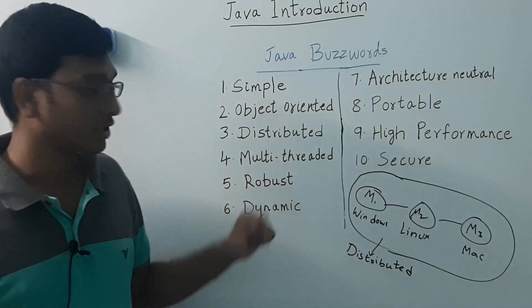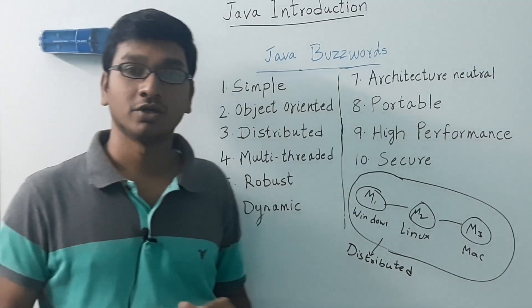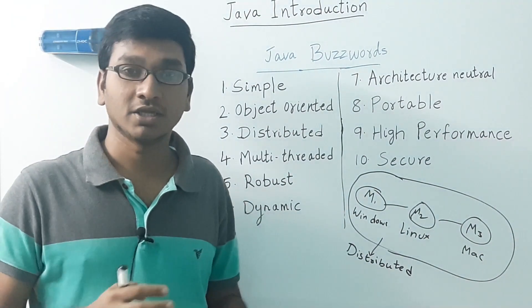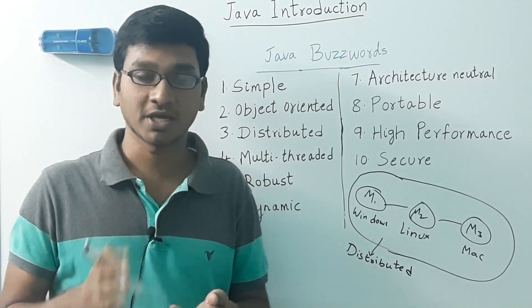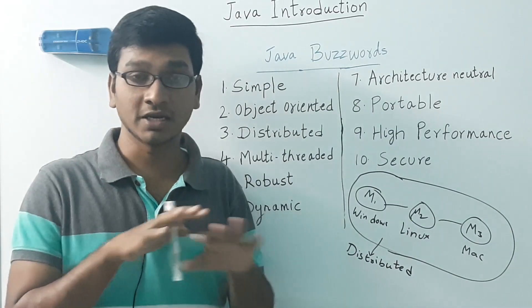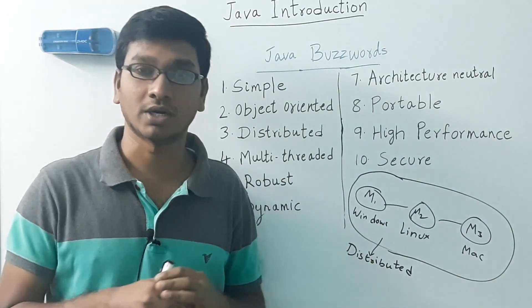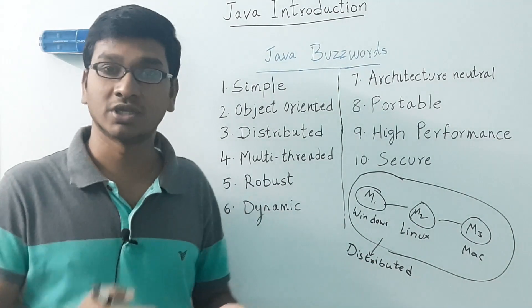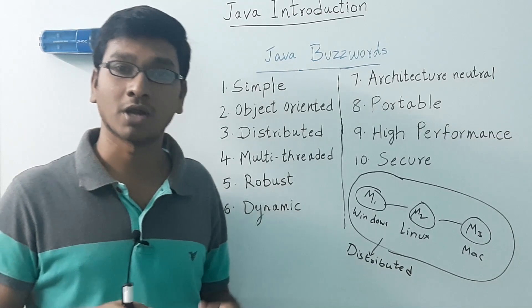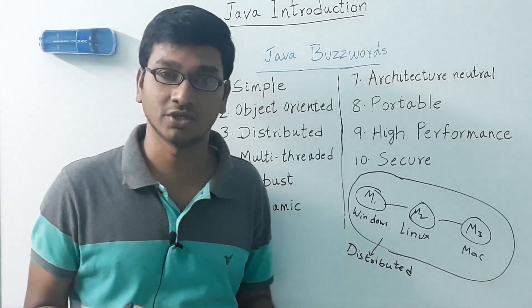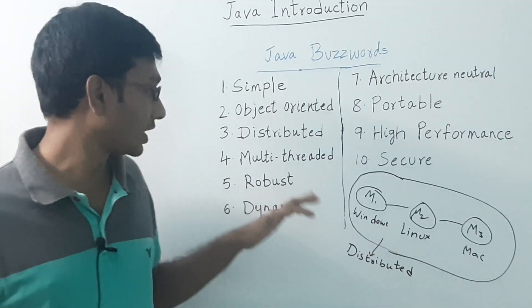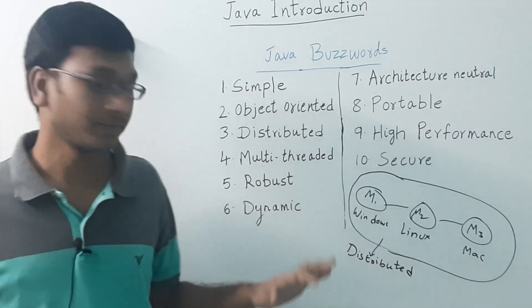Next is multi-threaded. A task is divided into subtasks and run in parallel at the same time, so that we save time and achieve efficiency. Java supports multi-threading.